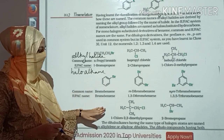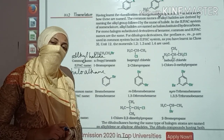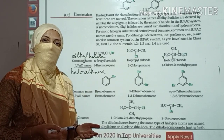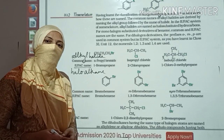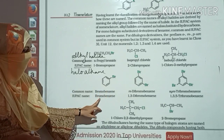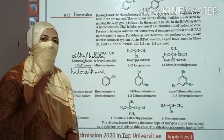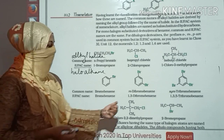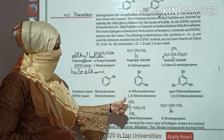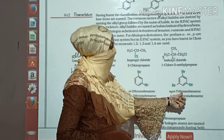This was all about haloalkanes. What about haloarenes? You have a common system and IUPAC system. Sometimes the common name and IUPAC name are the same. For example, the IUPAC name is bromobenzene, and the common name is also bromobenzene. For di-substituted compounds, positions are indicated as ortho, meta, or para.